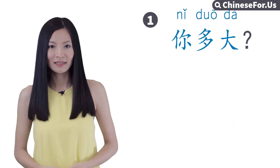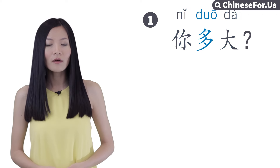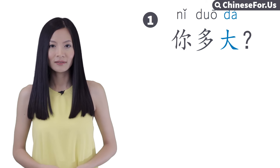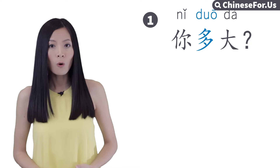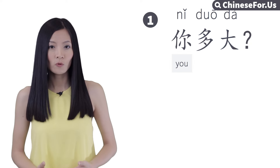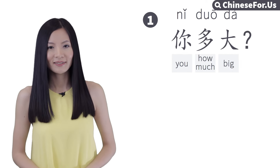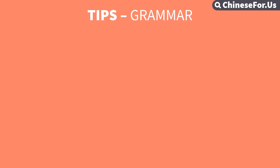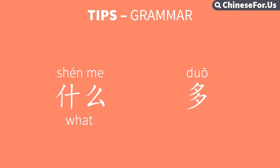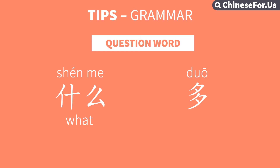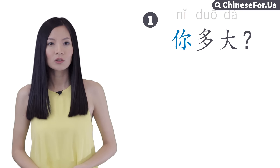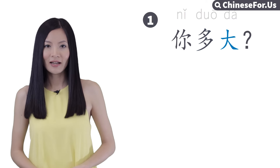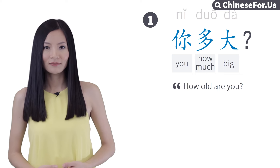你多大? You, how much or how many, big — How old are you? 你多大. So just like 什么, meaning 'what', here 多 is a question word. But 多 itself is an adverb. By using this adverb, you can ask a question regarding how much or how many. 你多大? How old are you? Very good.